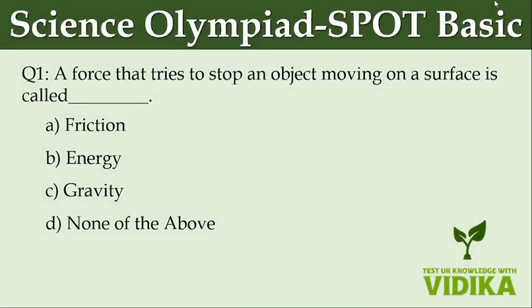A force that tries to stop an object moving on a surface is called dash. Option A, friction. Option B, energy. Option C, gravity. Option D, none of the above.